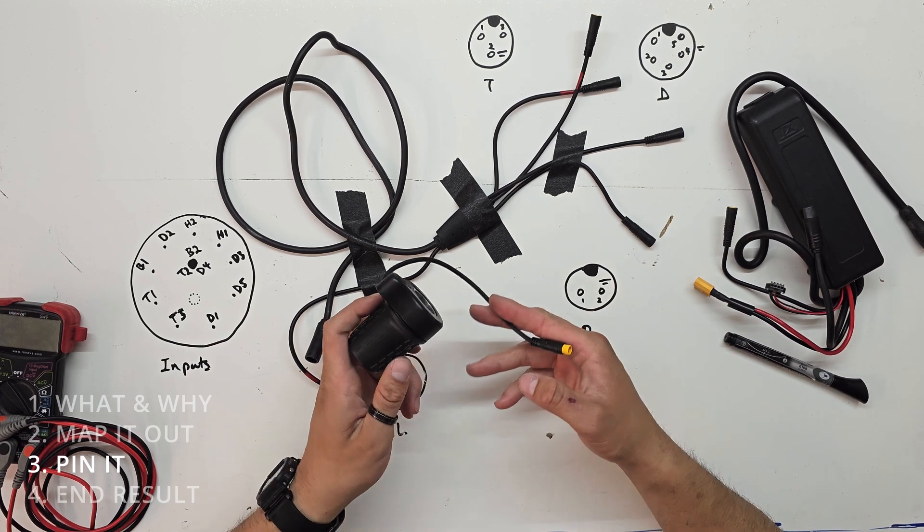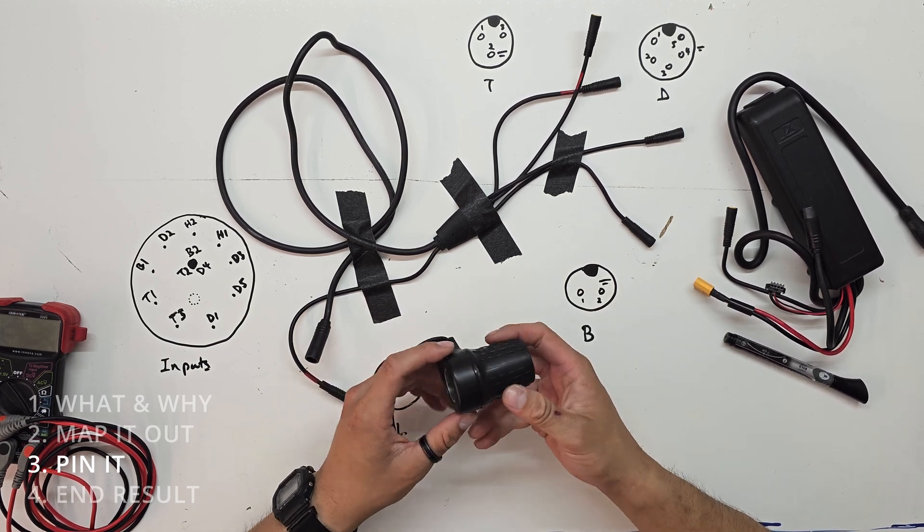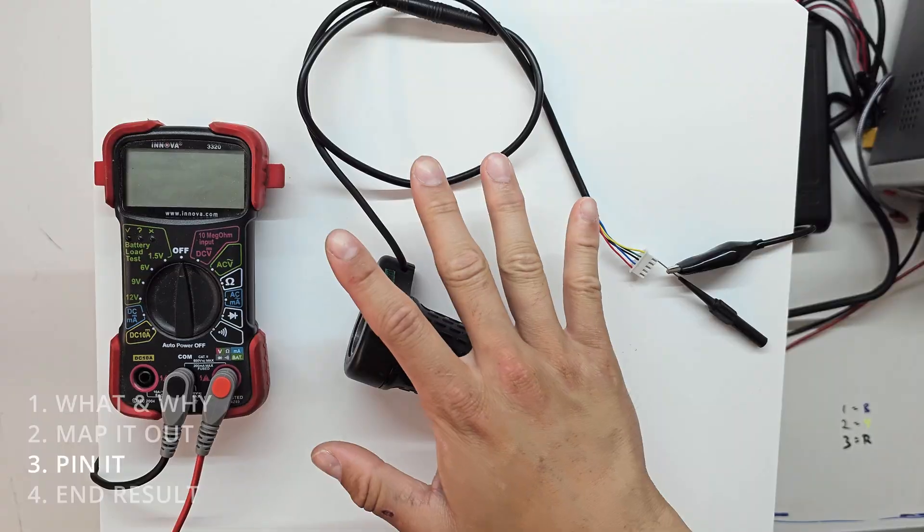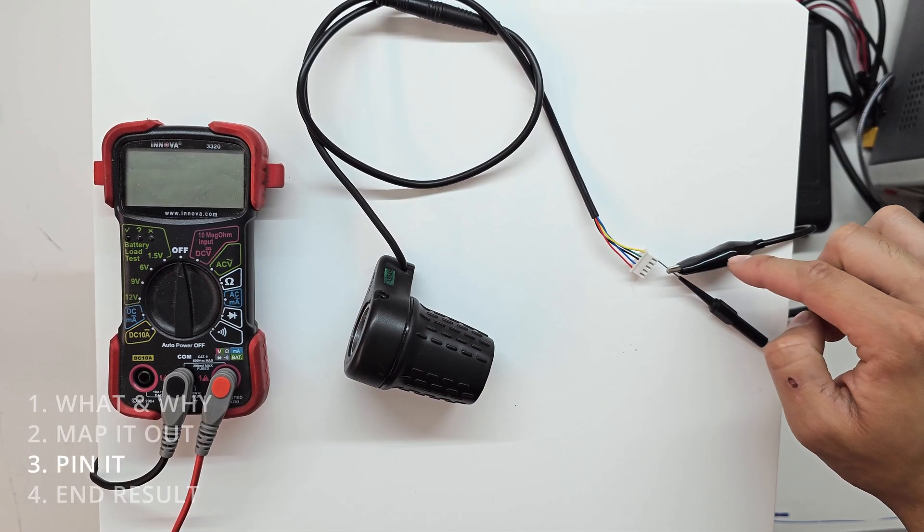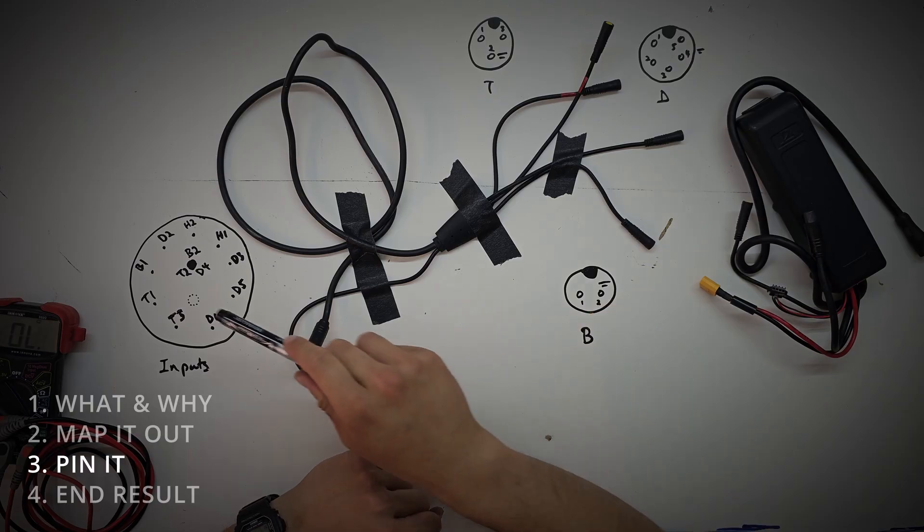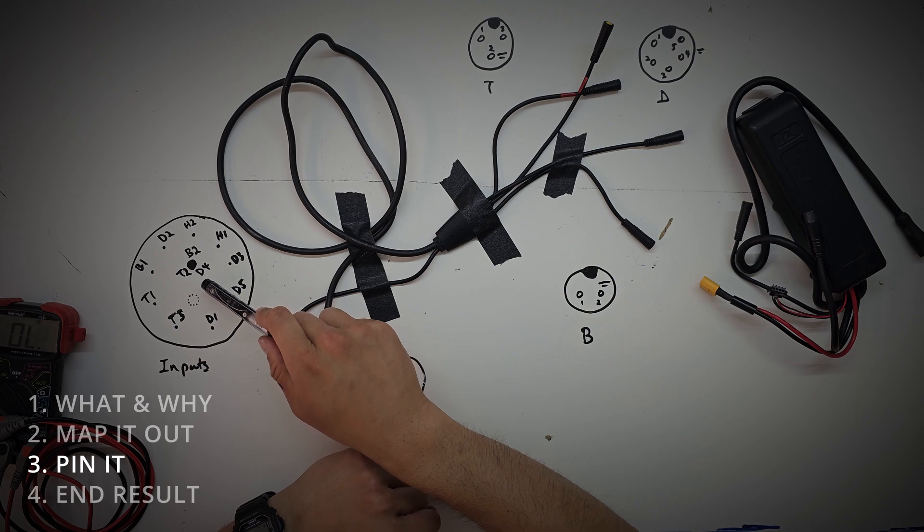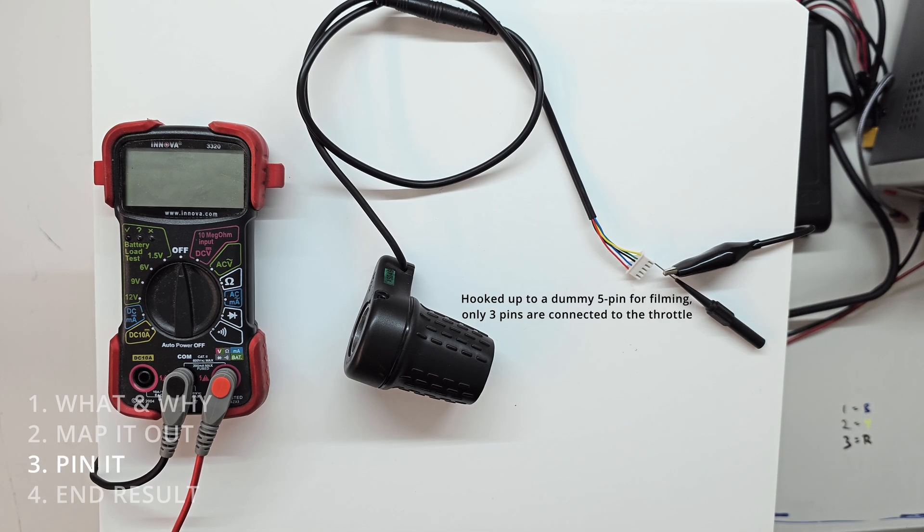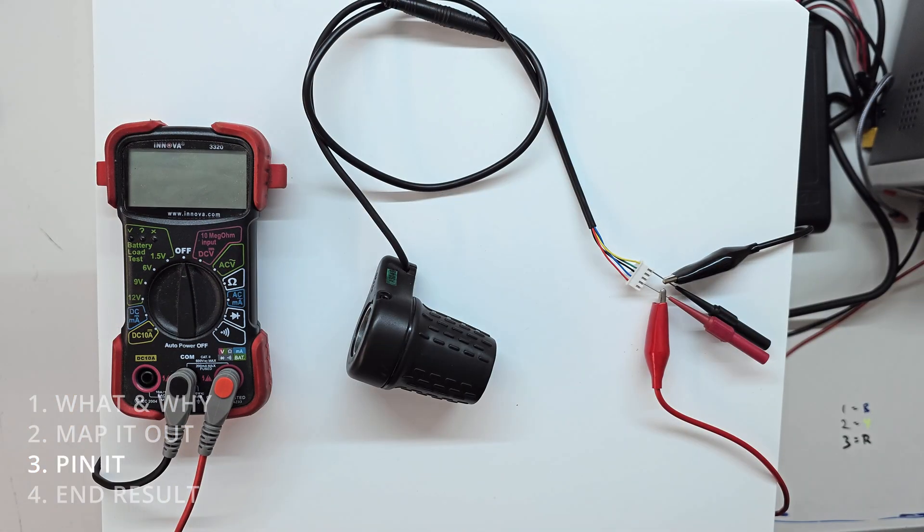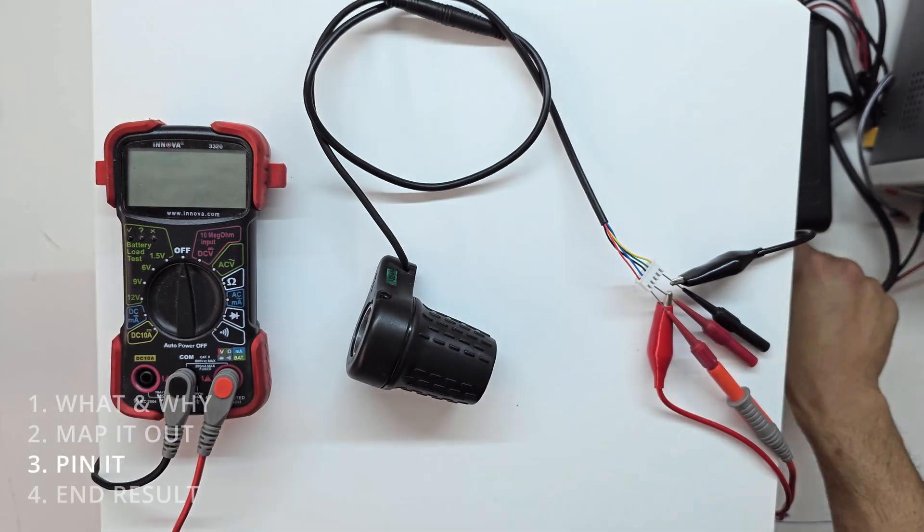We know which pin goes where. Now we need to know which pin does what. So we're going to use the throttle as an example. Here's our throttle right now. All we know is the common ground was common across the other connectors. So that one's for sure. For the other two pins that a throttle uses, we're just going to guess. We're going to guess that that one is our plus five volts. And we're going to guess that the other one is our signal.